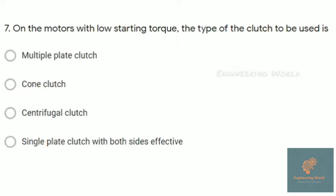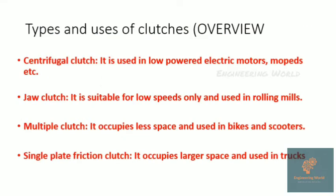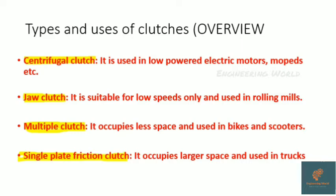Next question: On motors with low starting torque, the type of clutch used is centrifugal clutch. I am giving here the types and uses of clutches. Centrifugal clutch is used in low-powered electric motors and mopeds. Jaw clutch is suitable for low speeds only and used in rolling mills. Multiple clutch occupies less space and is used in bikes and scooters. Single plate friction clutch occupies largest space and is used in trucks. Please take a screenshot of this.